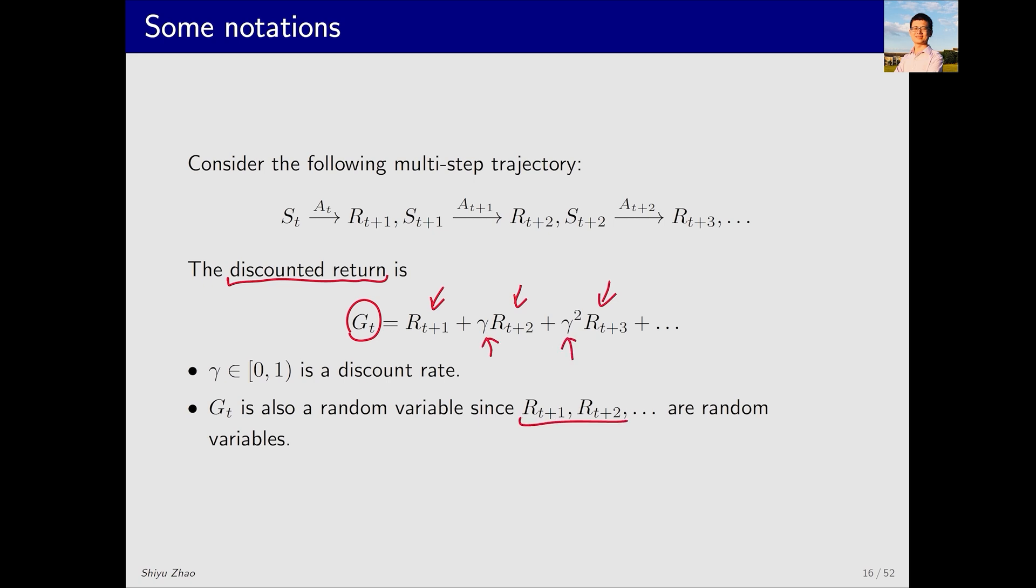Since r_{t+1}, r_{t+2}, and so on, are all random variables, G_t is also a random variable.